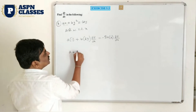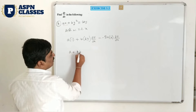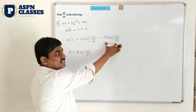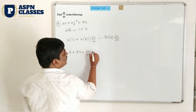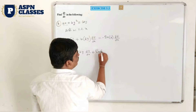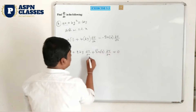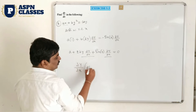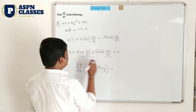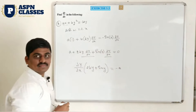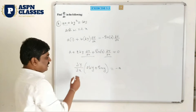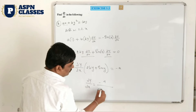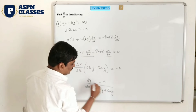Next step: A into 1 is A, plus B times 2y dy/dx, and the minus sin y dy/dx term shifted to this side becomes plus sin y dy/dx, equals 0. Take dy/dx as a common factor — 2By plus sin y remaining — equals minus A shifted to this side. So dy/dx equals minus A divided by 2By plus sin y. This is the last answer.